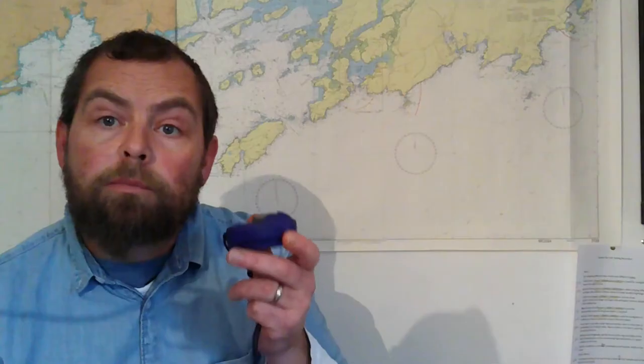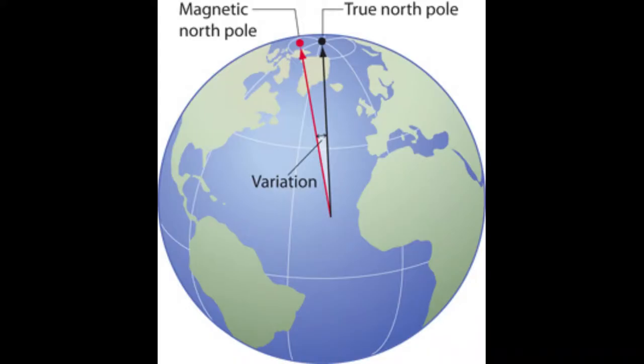When we think of a compass, it's pointing north. It's pointing at magnetic north, not the north pole. Our charts are orientated to true north, to the north pole. But our compass is pointing at magnetic north, which is in a different location. We have to make account for that and make allowance for that when we're navigating.